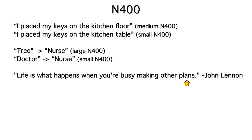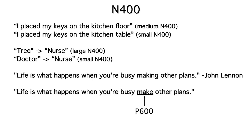But keep in mind that the N-400 is about the predictability of the meaning, not about syntactic predictability. If we make the sentence grammatically incorrect by changing making into make, you wouldn't get an N-400 to make. Instead, you'd get a different component called P-600.